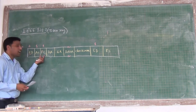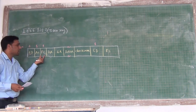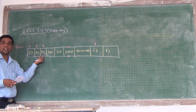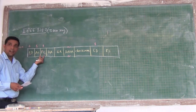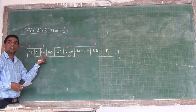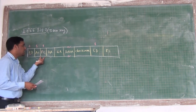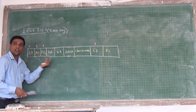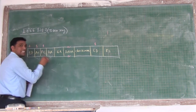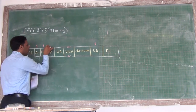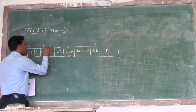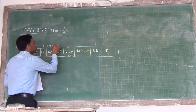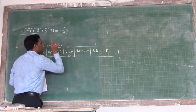The frame control field indicates whether the frame is a data frame or a control frame — it is basically either a data frame or a control frame. The destination address varies between 2 or 6 bytes, and the source address is again either 2 or 6 bytes.